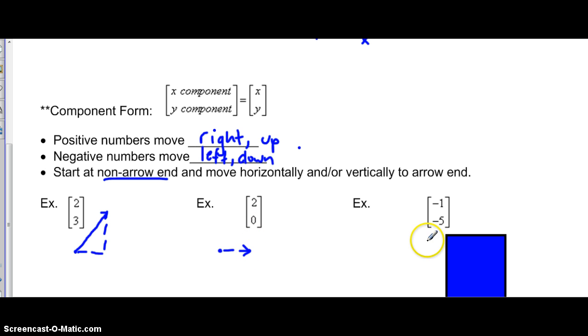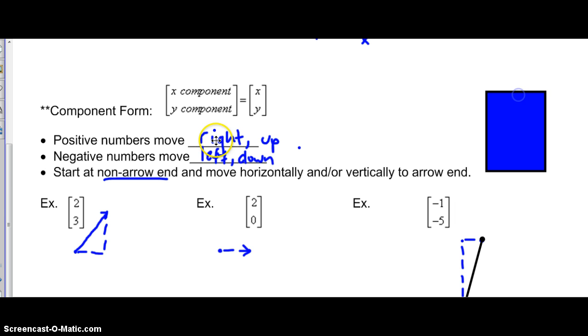I want you to go ahead and try this one on your own and pause the video and then come back. Hopefully when you drew in the negative direction for both, you've got something similar to what I have here. You should have moved one unit left for the negative direction and then five units down for the negative five component. Our endpoint starts here and our arrow is down here.